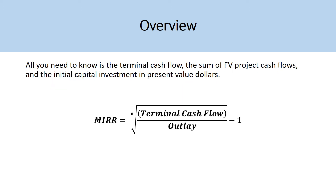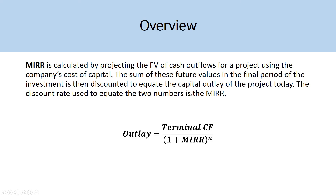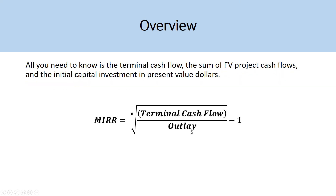All you need to know is that the terminal cash flow — the sum of the future value of project cash flows — and the initial capital outlay in present value dollars can be rearranged in this formula to isolate for MIRR. The calculation is dividing the terminal cash flow by the cash outlay, taking the root to the time period for that respective investment. If the investment is five years, then N equals five, and then you subtract one to get the modified internal rate of return.